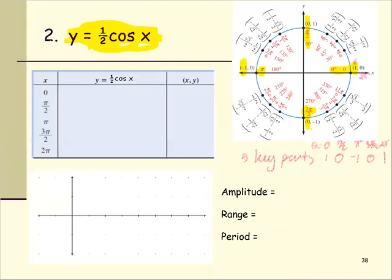To complete the table based on the function y equals one half times cosine x, we make a template and fill in the parentheses with the five key points. These numbers are from zero to two pi, which is one complete cycle or one period of the graph.